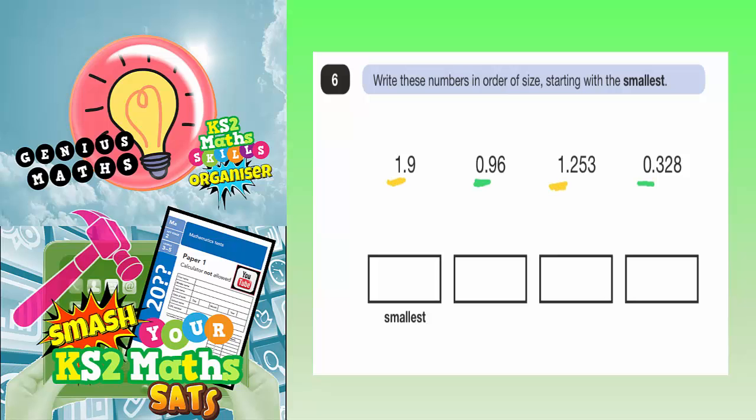Because the ones that have underline in yellow begin with 1 point something, the ones that have underline in green are 0 point something.